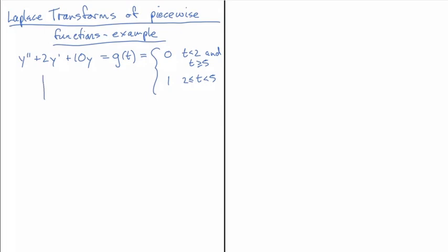So what does that look like? We have g of t equal to 0 up until t equals 2, then it jumps up to 1 all the way until t equals 5, and then it's equal to 0 from there on.